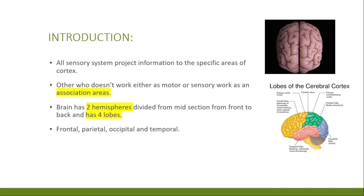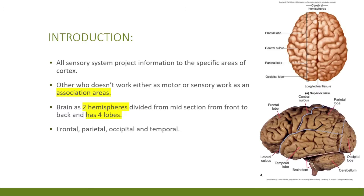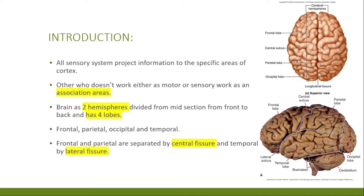The two hemispheres are divided deeply from front to rear, with the left hemisphere on one side and the right hemisphere on the other. Each hemisphere is divided into four lobes: the parietal lobe, occipital lobe, temporal lobe, and frontal lobe. The frontal and parietal lobes are separated by the central fissure, which runs from the top of the head to the side. The temporal lobe is demarcated by the lateral fissure on the side of the brain.